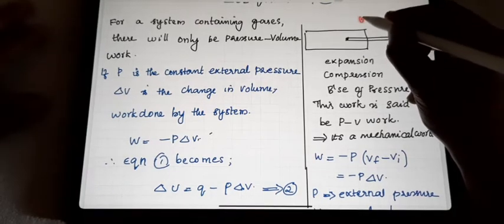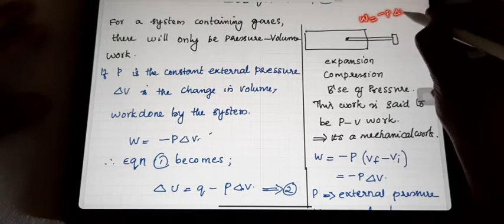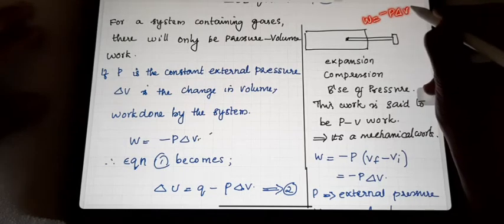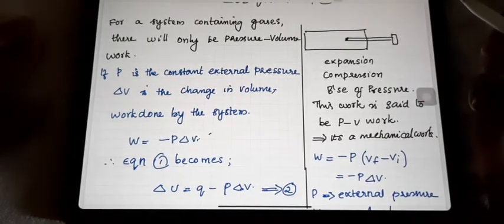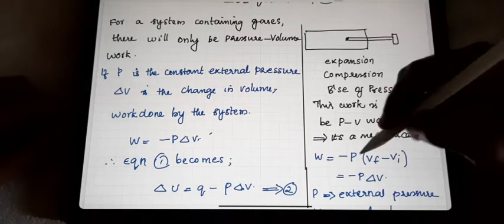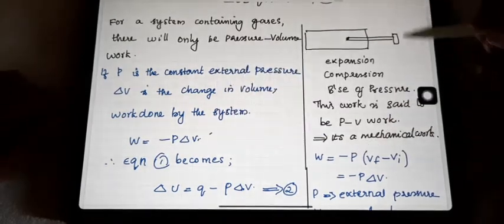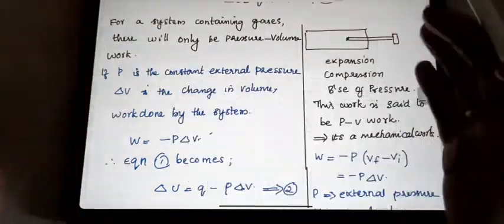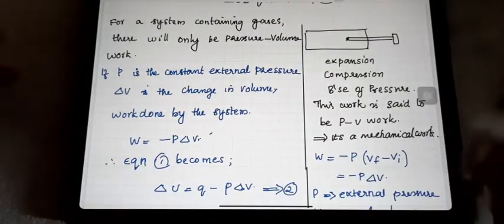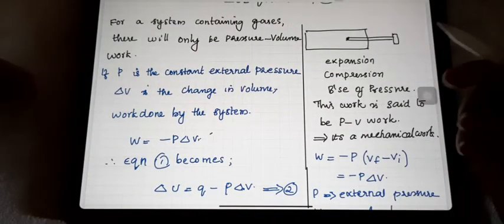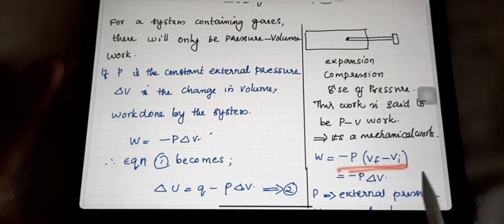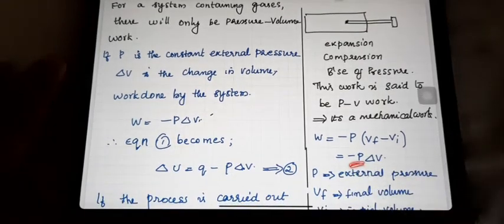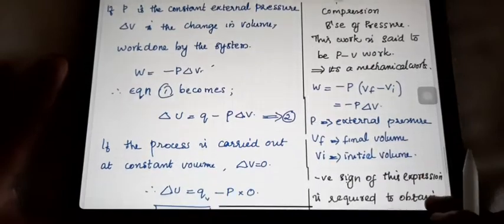Assume W is equal to minus P delta V. How does this equation come? This is the usual equation we use in thermodynamics. W is equal to minus P into (VF minus VI). VF means final volume. When we are doing any work — expansion or compression — the volume will be changing. So, initially what was the volume and finally what was the volume, on that basis we write: VF minus VI, which equals minus P delta V. P is the external pressure we are applying, VF is the final volume, and VI is the initial volume.